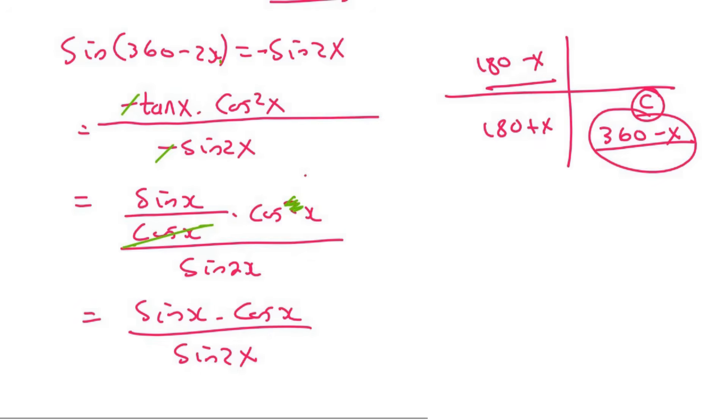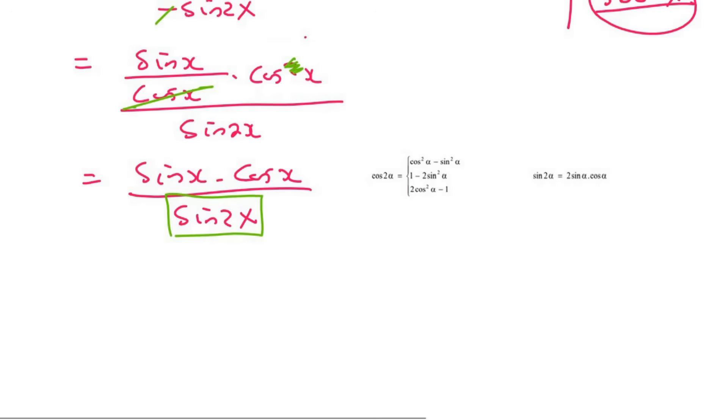But what you need to realize instead is that this is a double angle. Can you see that it's this one over here? And so what happens is that at the top we just have sin x times cos x, then at the bottom we're going to change it to 2 sin x cos x.